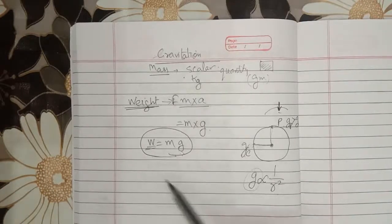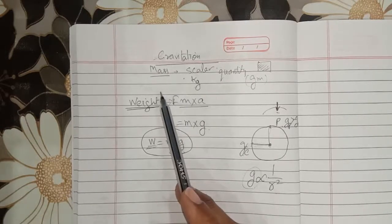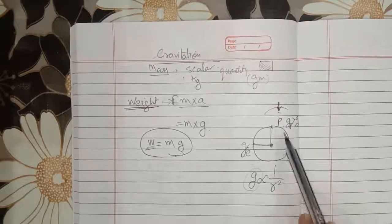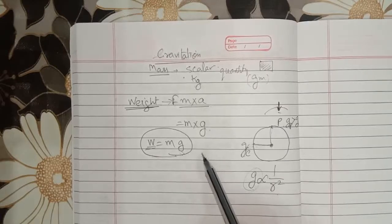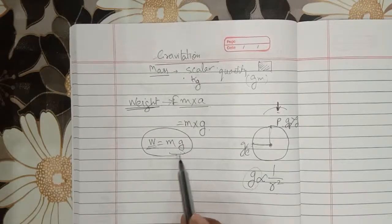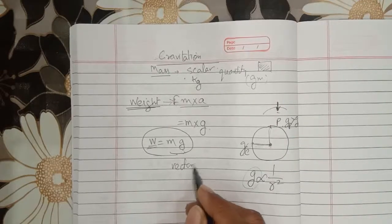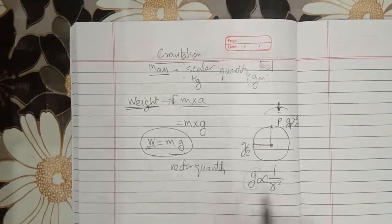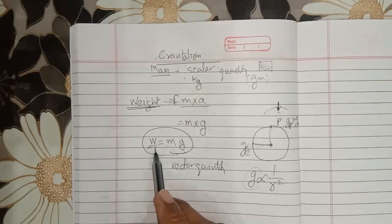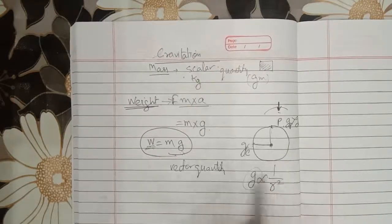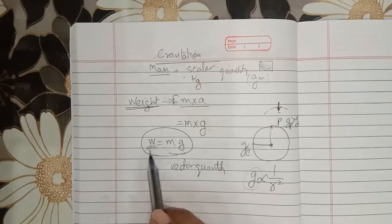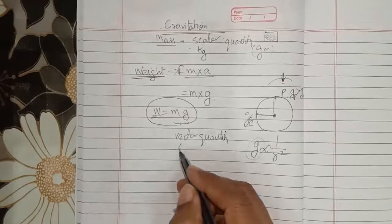The weight of a body is defined as the force with which it is attracted towards the center of the Earth. Since mass is a scalar quantity, but weight depends on g and g is also a vector quantity, weight is a vector quantity — it has both magnitude and direction. The SI unit of weight is the same as the SI unit of force, which is Newton.